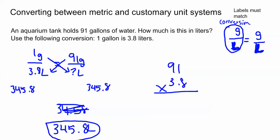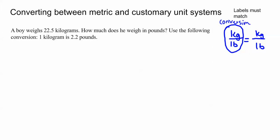Let's take a look at a second example. This one says a boy weighs 22.5 kilograms and it asks how much does he weigh in pounds. So we haven't gained or lost weight, we're just converting between one system and the other, metric and customary. This time it starts us off in the metric system, kilograms, and moves us into pounds, the customary system. Use the following conversion: one kilogram is 2.2 pounds.